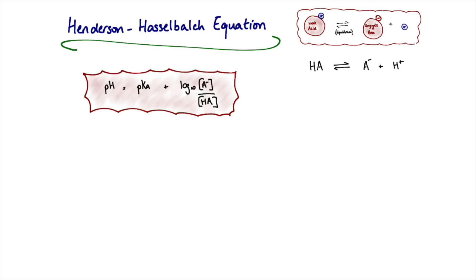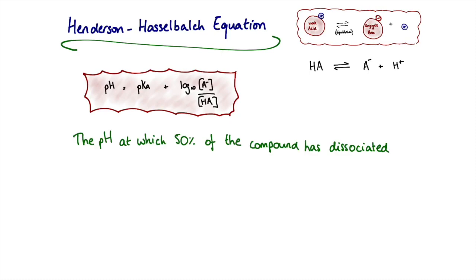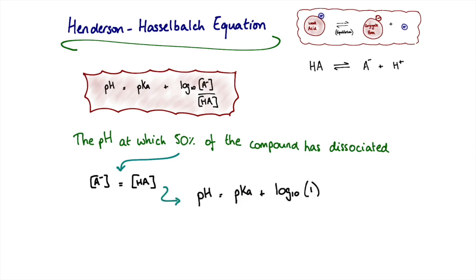This leads to the second definition of pKa: the pH at which 50% of the compound is dissociated. At 50% dissociation, [A⁻] equals [HA], so the log term becomes log(1) = 0. Plugging into the Henderson-Hasselbalch equation gives pH = pKa + 0, meaning pH = pKa. When the concentrations of conjugate base and weak acid are equal, the log term cancels and the pKa equals the pH.